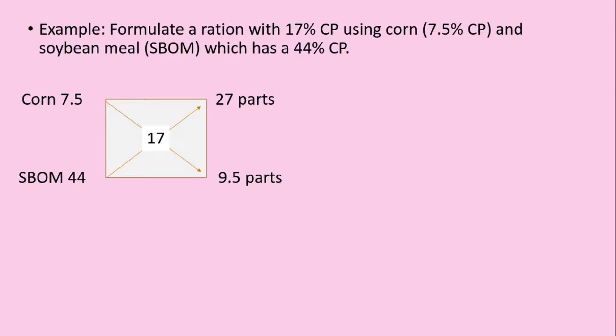Right now we have the number of parts of each ingredient needed to satisfy the requirement, but we need to express these figures in terms of percentage for practical considerations. So the next step is to get the sum: 27 plus 9.5, you'll get 36.5. Then divide 27 parts of corn by 36.5 and multiply by 100, and you will get 73.97% of corn.